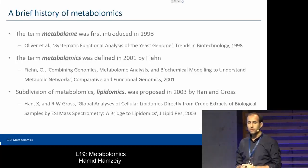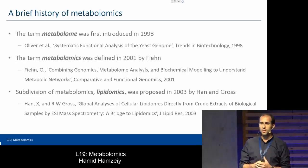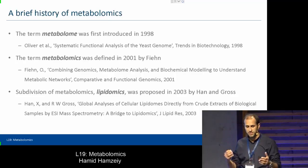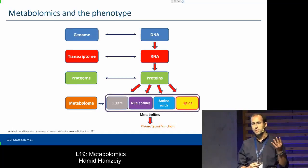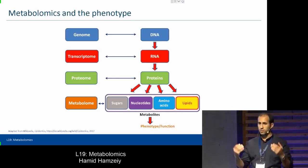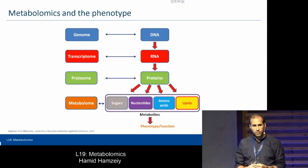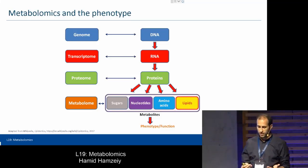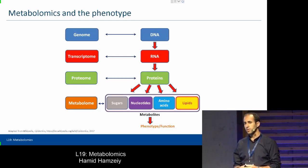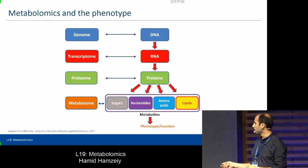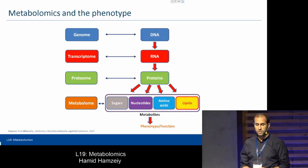We also have lipidomics, which came a few years after, which is just a subdivision of metabolomics studying the entire set of lipids. To give you an overview: we have the genome consisting of DNA with four bases; the transcriptome with RNA, again four bases; the proteome with 20 amino acids and modifications; and the metabolome. Here we really have thousands and hundreds of thousands of compounds. The most exciting thing about metabolomics is that it is the closest level of data that we can get to the phenotype, which makes it very interesting and exciting.